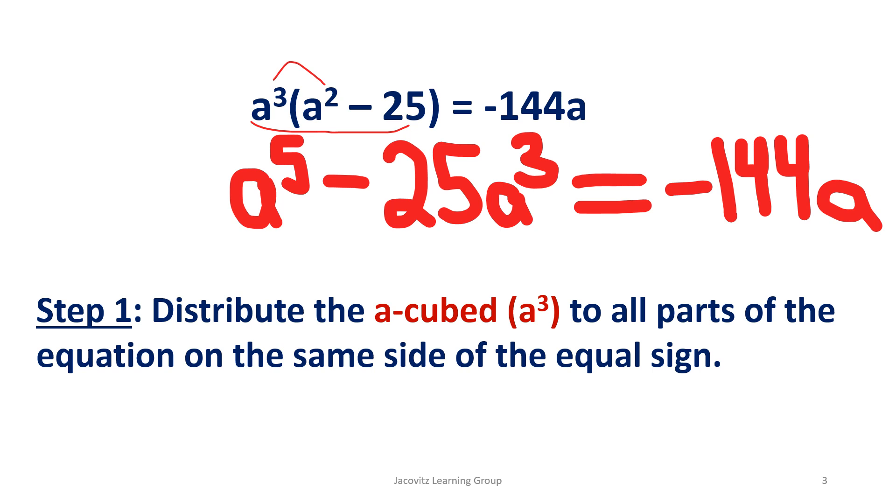Now you know you have to distribute A cubed to the second. You have a power's rule. And with your power's rule, and this is plural here because it's all powers, you're going to add 3 plus 2 because there is a parenthesis there. And 3 plus 2 equals 5.